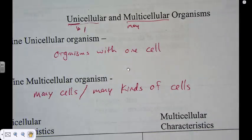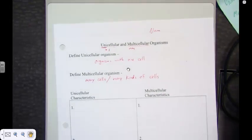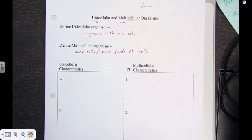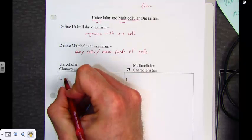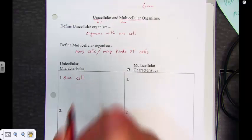Now, we're going to go ahead and write out some additional characteristics to distinguish between a unicellular organism and a multicellular organism. You may be familiar with, first of all, unicellular organisms. One key characteristic is that they have just one cell.